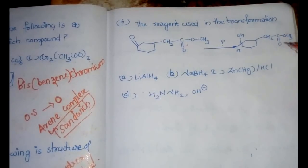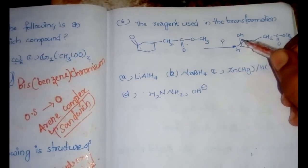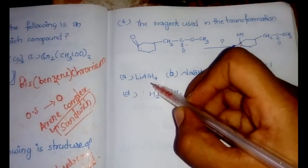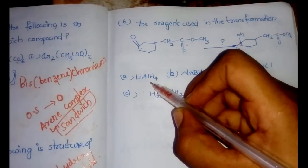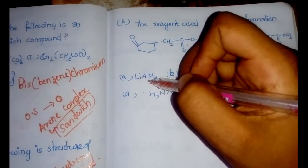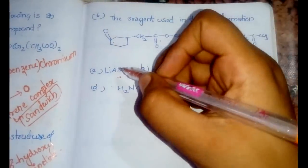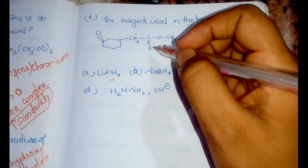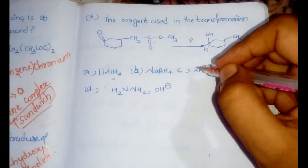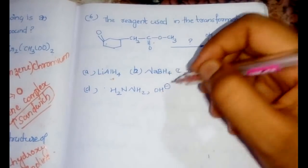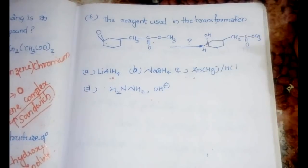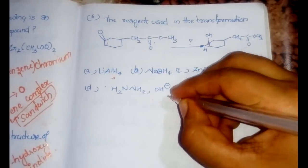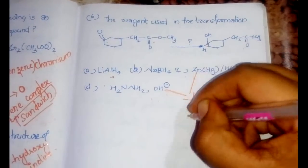Looking at the product: the ester carbonyl group remains unchanged, but the ketone carbonyl group has been converted to an alcohol. Going to the options — lithium aluminum hydride (LiAlH₄) is not selective; it can reduce both the ketone and the ester carbonyl.